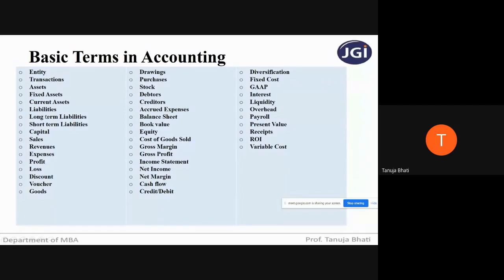Next is liabilities. Liabilities is something a person or entity owes, usually a sum of money, to some other person or company. What are long-term liabilities? Long-term liabilities are financial obligations of the company that are due for more than one year in the future — where the payment need not be made within a period of one year, but the entity is obligated to make payment over a period exceeding one year.